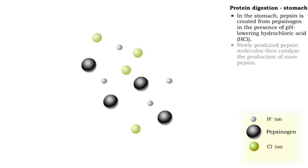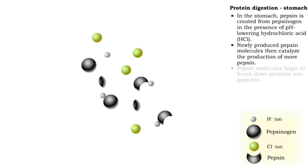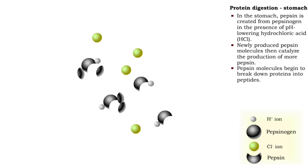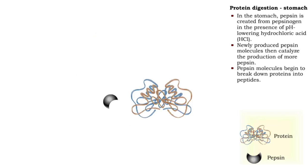Pepsin molecules, in turn, act to catalyze the production of even more pepsin. The catalytic action of pepsin breaks proteins into fragments called peptides.